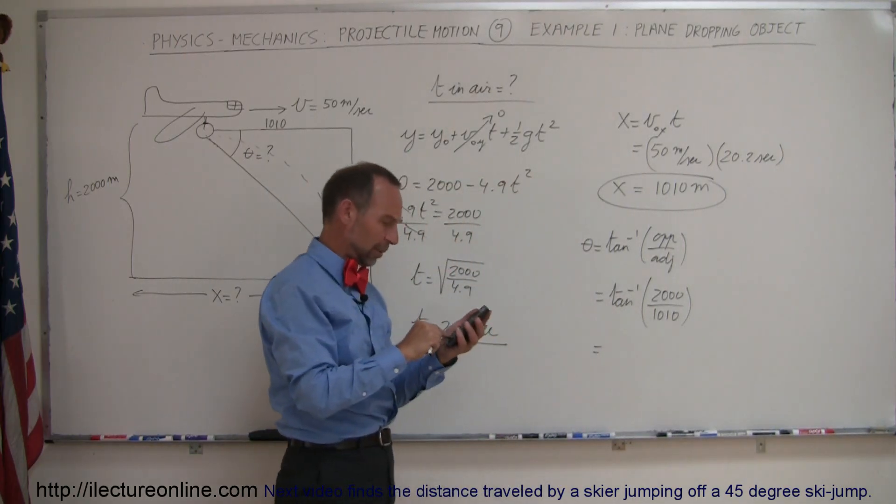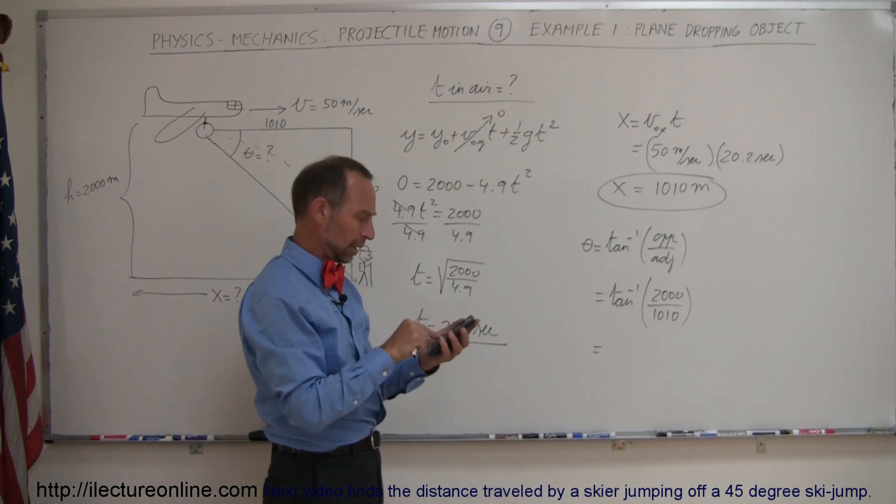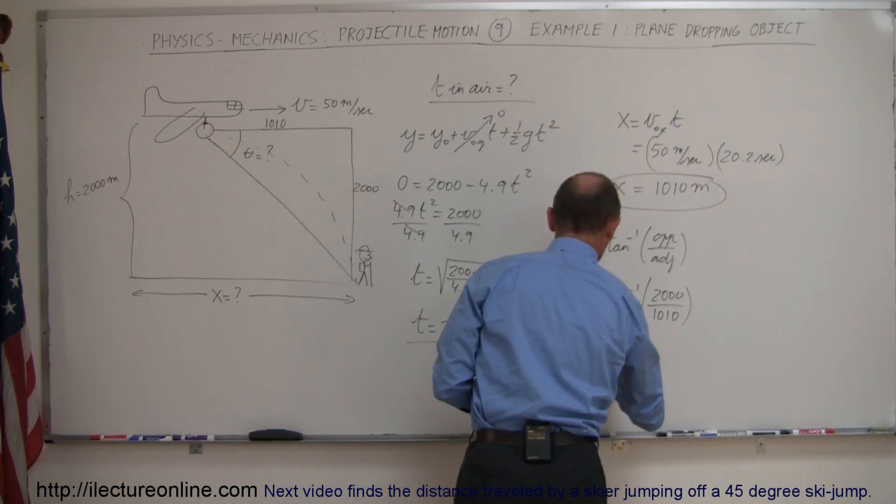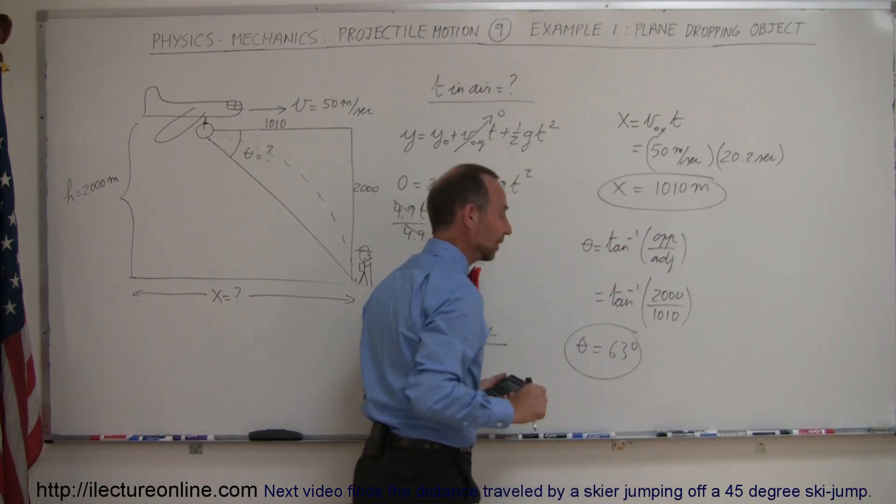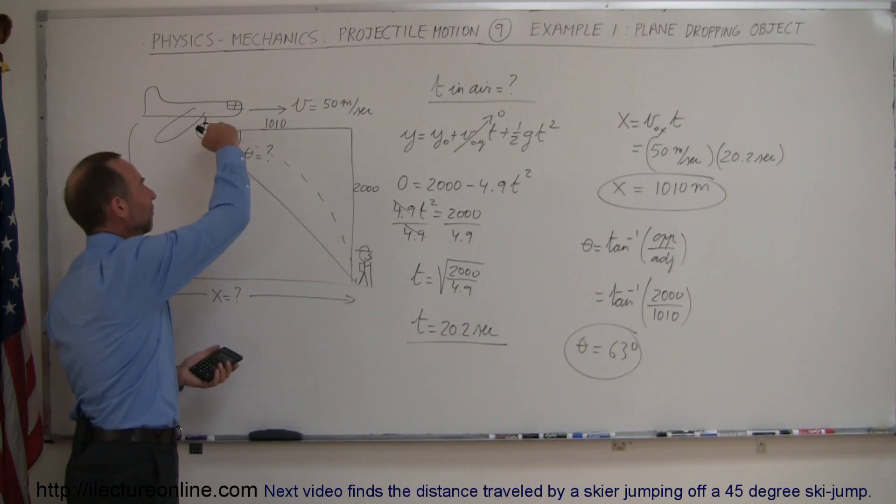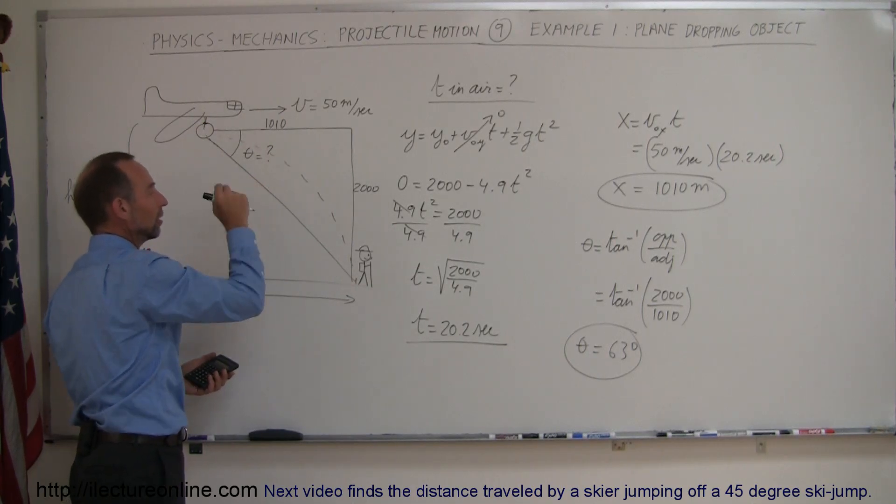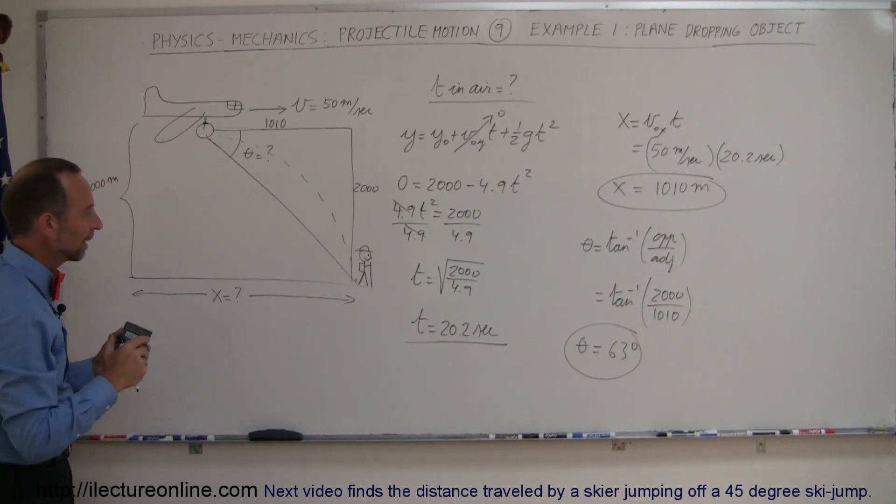And so let's see what that's equal to, take the arc tangent of that, and that will be 63 degrees. So, when the navigator is looking through a scope, finds the Boy Scout at an angle of 63 degrees below the horizontal, push the button, drop the bag, and the bag will land really close to the Boy Scout. And that's how you do that problem.